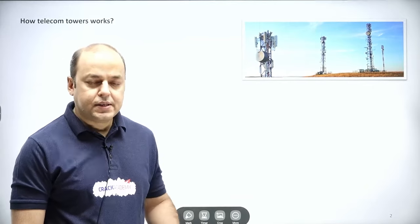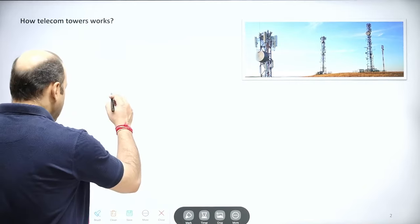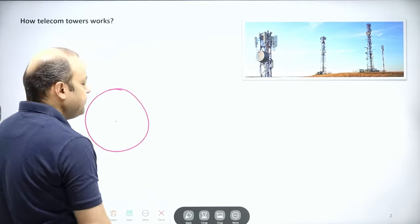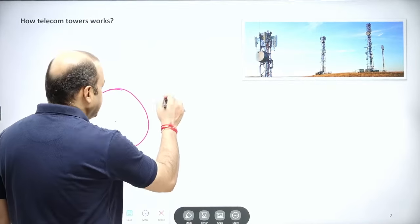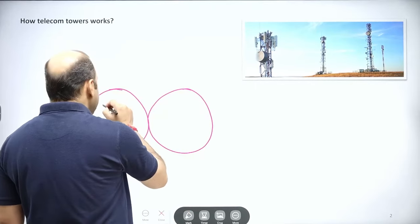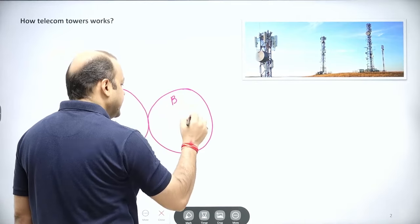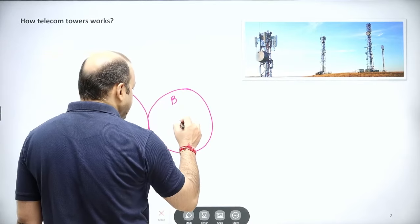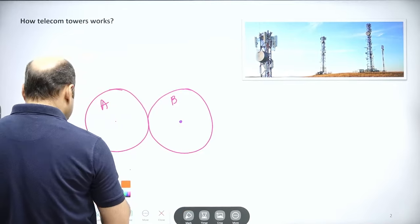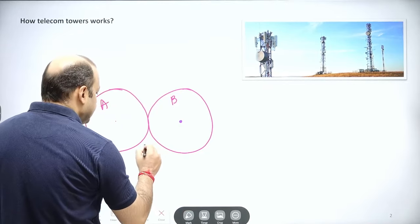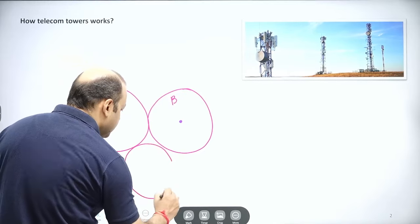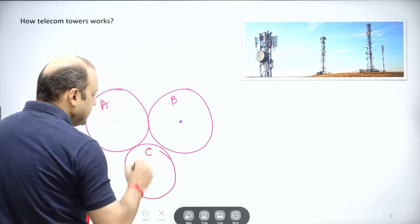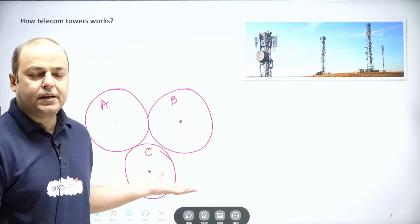Basically, how we do that is the first impression will be to create—suppose this is the area that we have to take care of—put a tower in the center. Another area, suppose this is area A, this is area B, and right at the center suppose this is another tower. Then we have another area which also needs the coverage, and for that we are using this third tower.